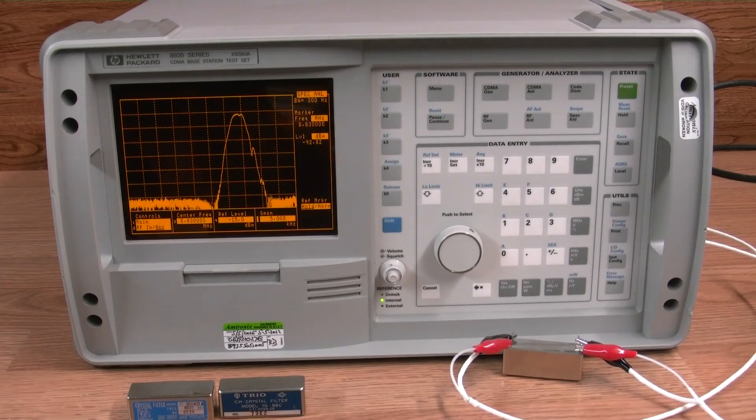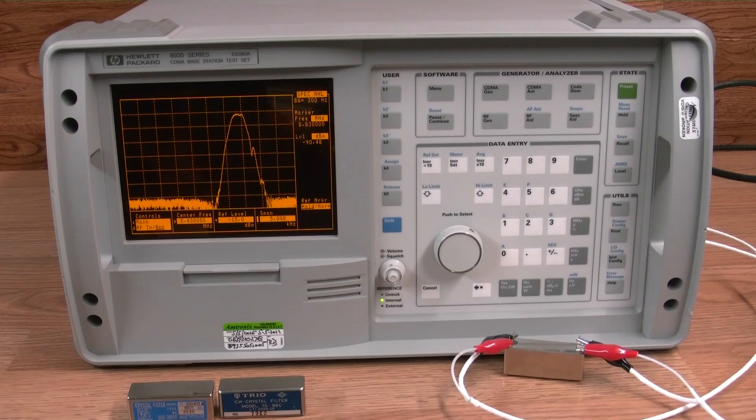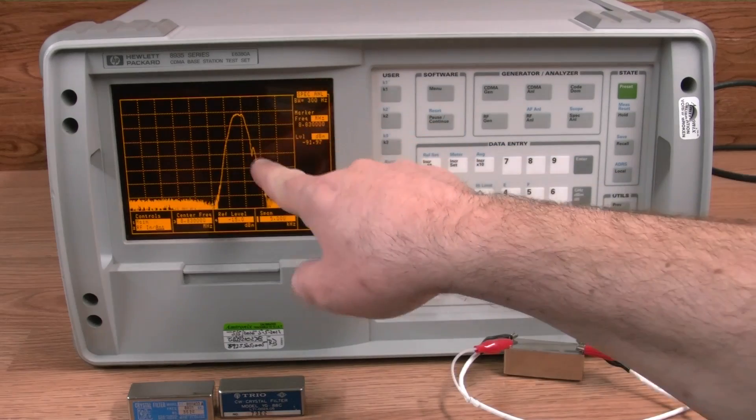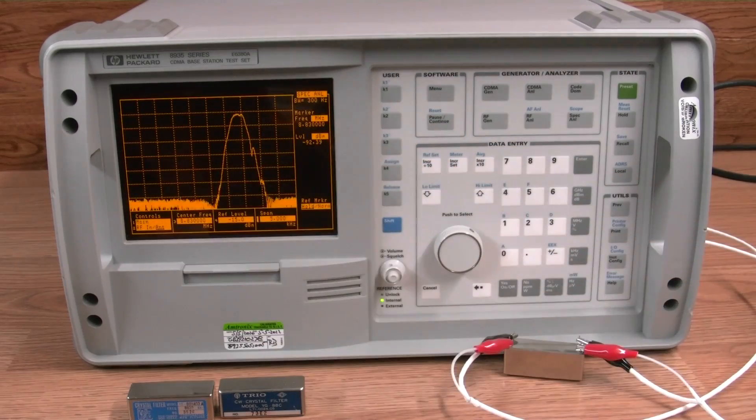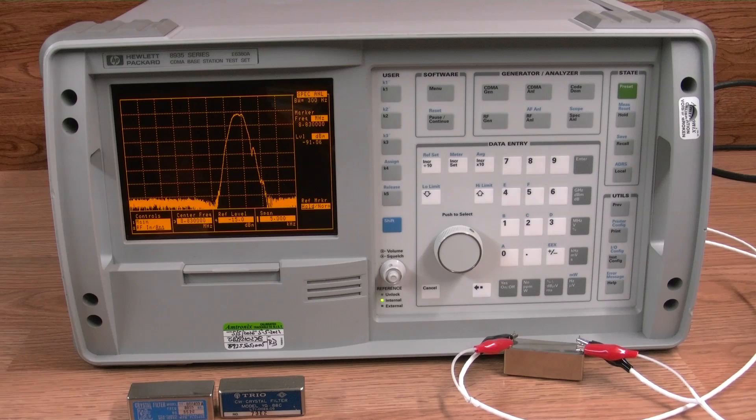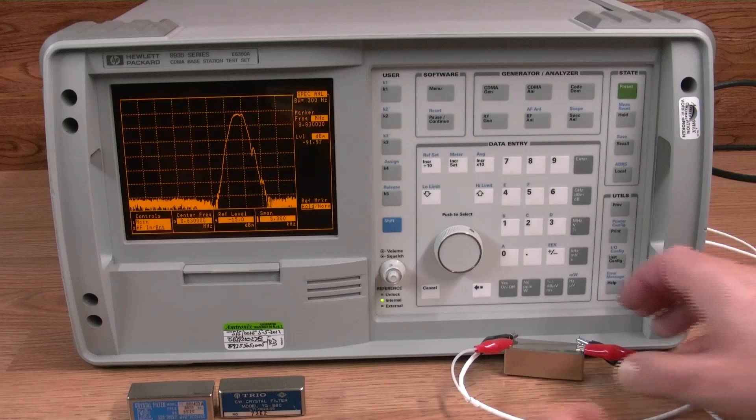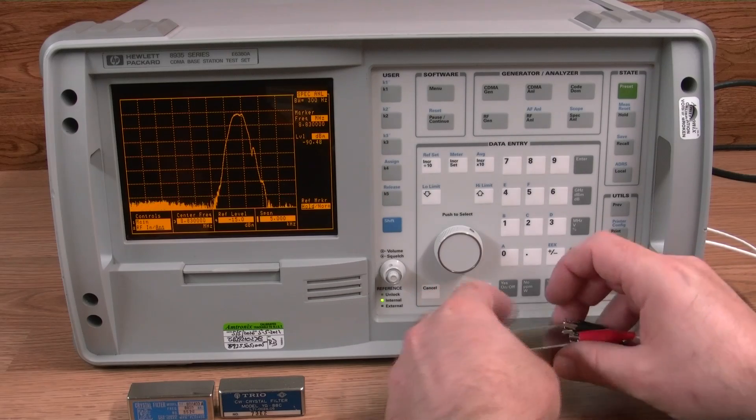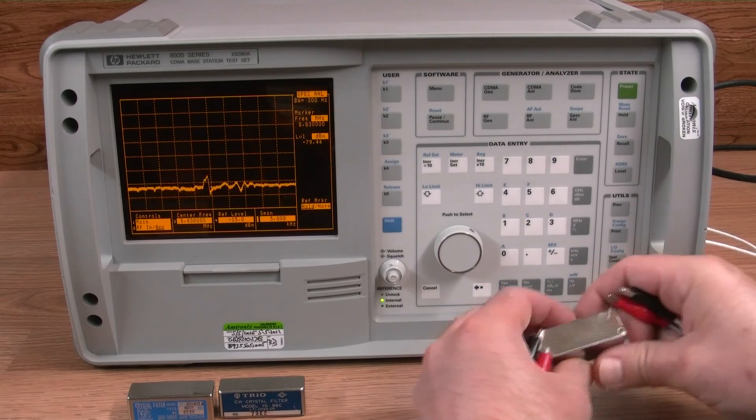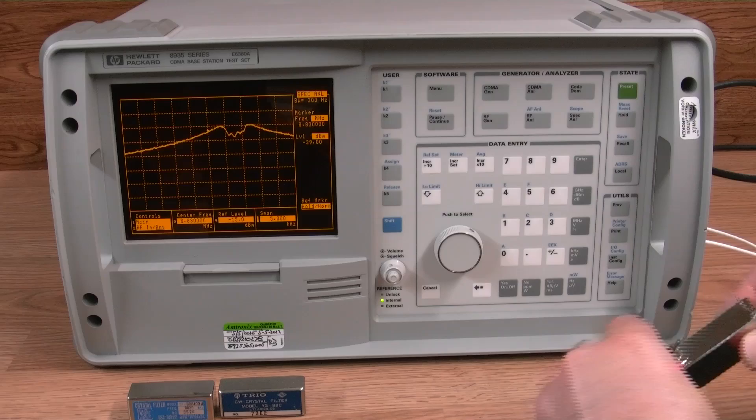It's about 400 Hertz wide on the top and the 30 dB point is down here all around 1 kC, so that's actually a little less than one. I'd consider that a pretty good filter. Go ahead and unhook that and hook the next one up.